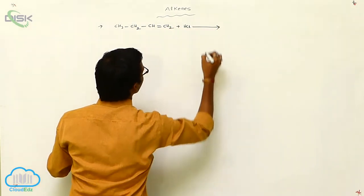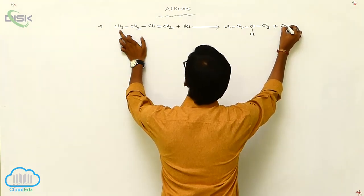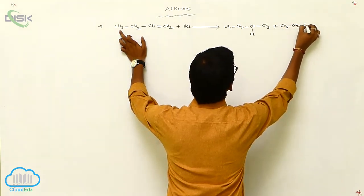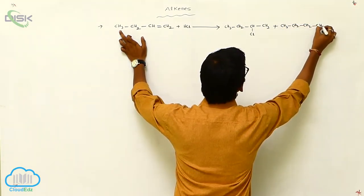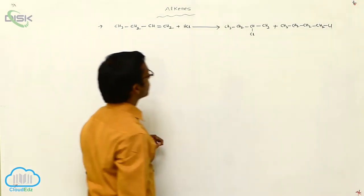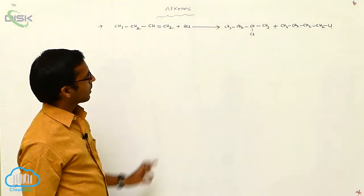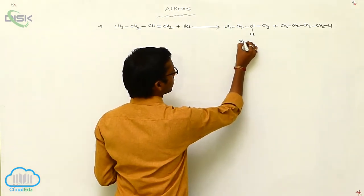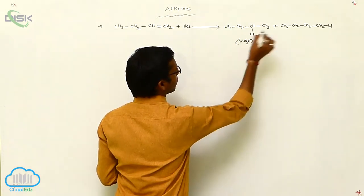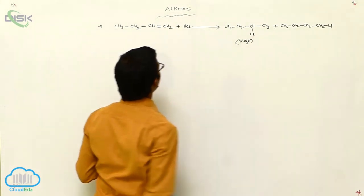It gives again two types of products. One is the major product, that is the Markovnikov product: CH₃-CH₂-CH(Cl)-CH₃, plus CH₃-CH₂-CH₂-CH₂-Cl.